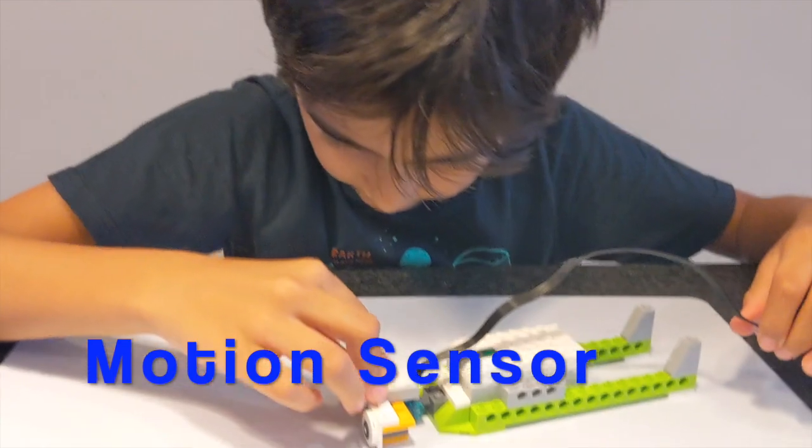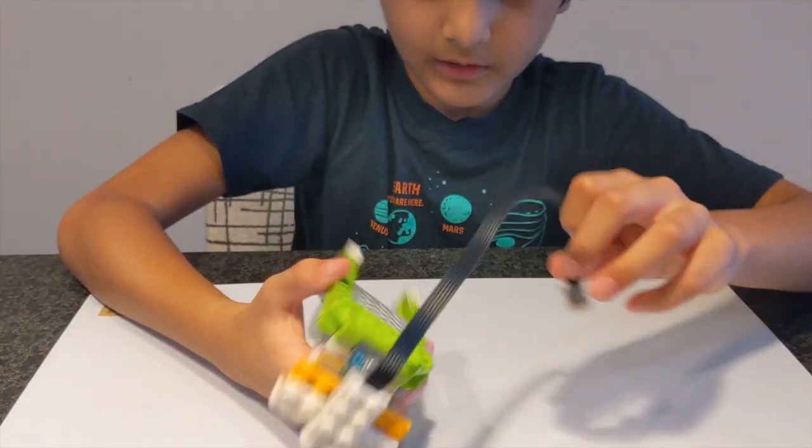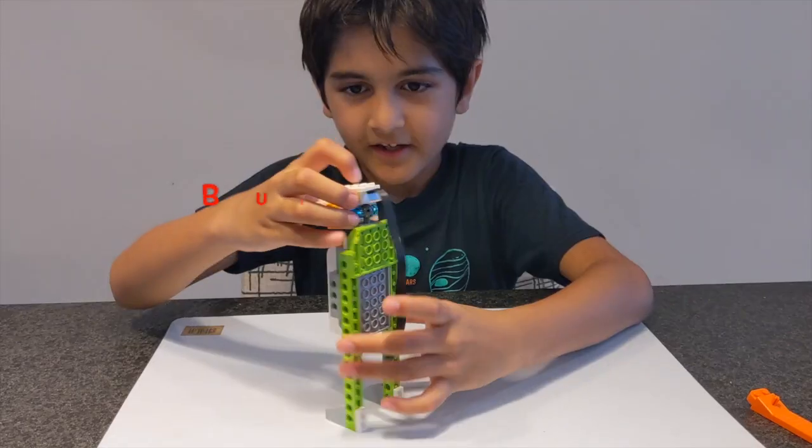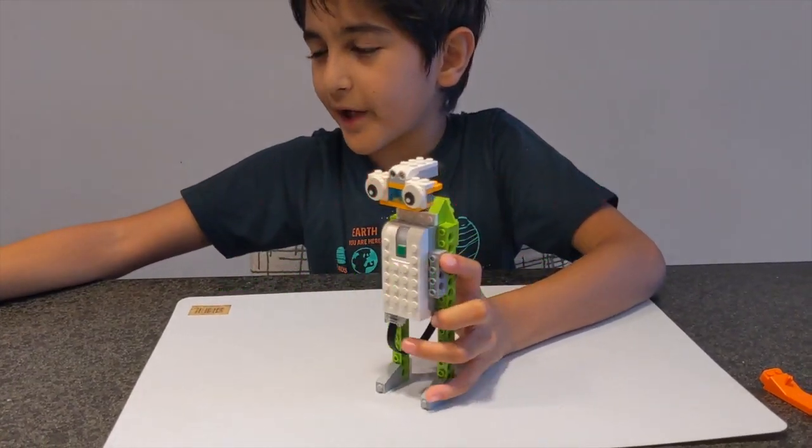Motion sensor. Put it right on top. And then final step, connect it to the smart hub. Now you have your spy robot.